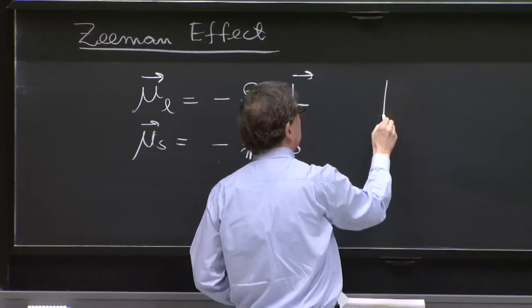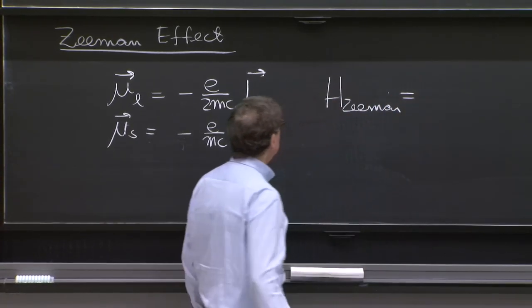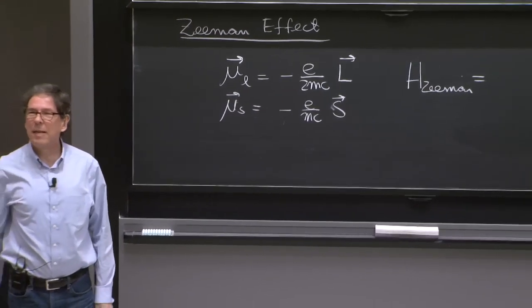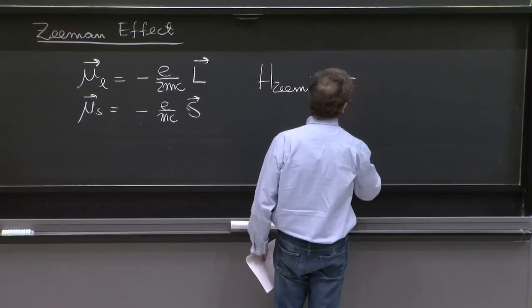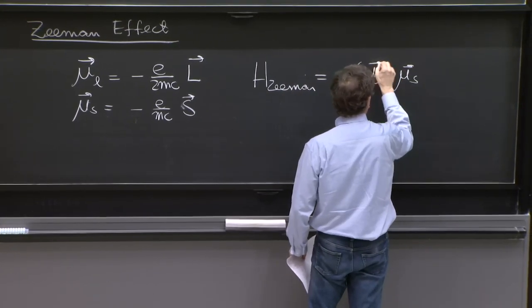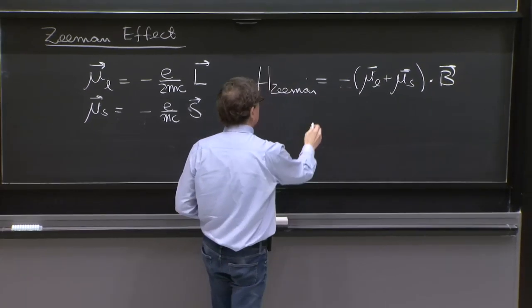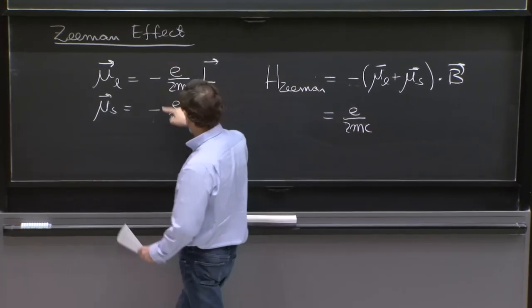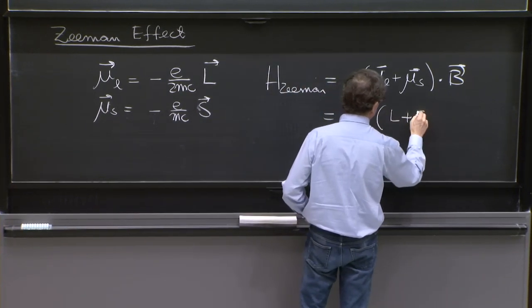So H Zeeman, you put an external magnetic field into the atom, a constant uniform external magnetic field. And you have a minus μ dot B. So you have an interaction μ_L plus μ_s dot B. So this is E over 2mc. That's the typical factor here. And a recognizable L plus 2S.